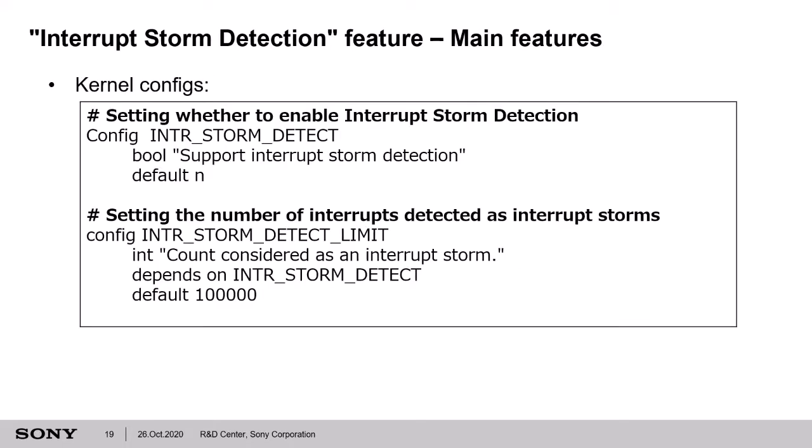Now I will talk about how to use this Interrupt Storm Detection feature. These are the kernel configs. The first setting is whether to enable this feature or not. The default is N, which means the feature is disabled. If you want to use this feature, please change it to Y to enable it. The next setting is for the threshold value which this feature uses to detect an interrupt storm. The default value is 100,000 times per 100 ms. This config applies to all IRQ queues.